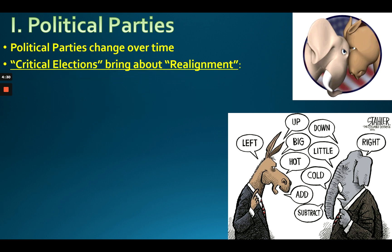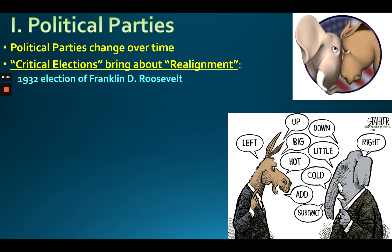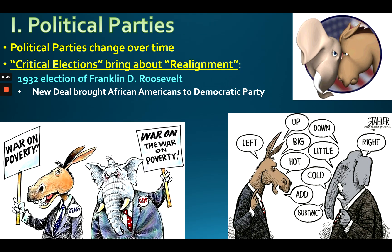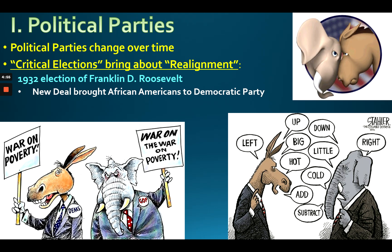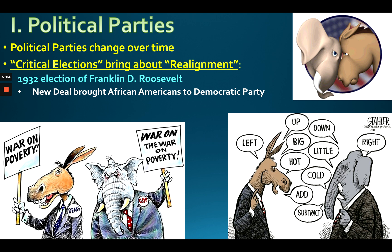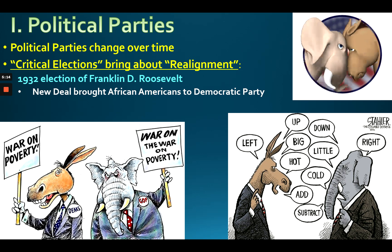There's something called a critical election that brings about realignment. Write that down. The 1932 election of Franklin Roosevelt is one example: the New Deal brought African Americans to the Democratic Party, because they had previously voted Republican since Lincoln freed the slaves. But keep in mind that everybody voted for FDR in 1932 — it was a landslide election — so it may not be the best example.